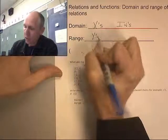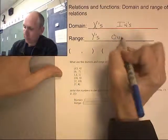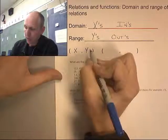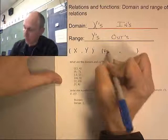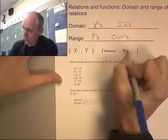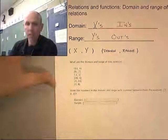The range, those are the Y's, or the Outs. So I would have X and Y. I could also call it my domain and range. There you go.